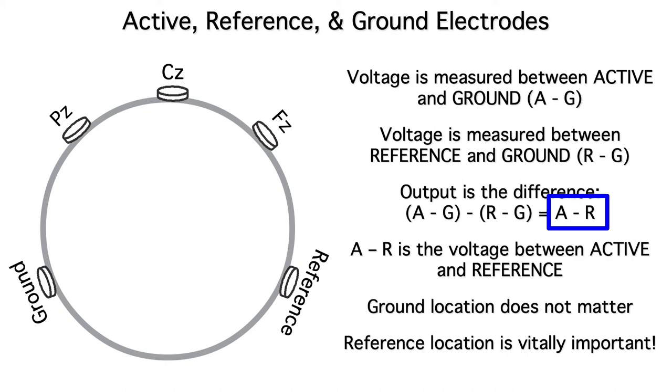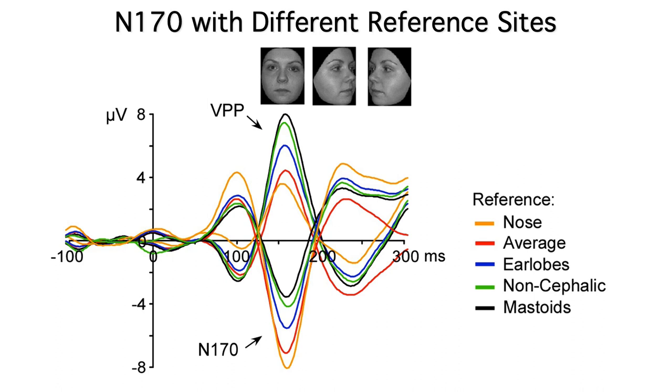Remember, after re-referencing, our voltage is A minus R. Here's what the N170 component looks like with different references. The reference has a big impact on N170 amplitude, and the N170 even reverses in polarity with some references.